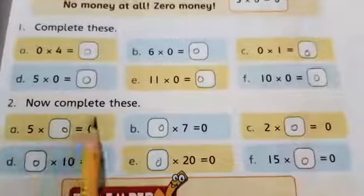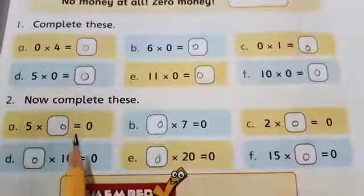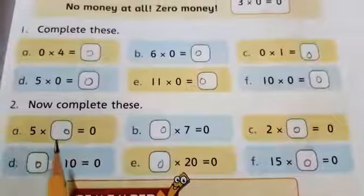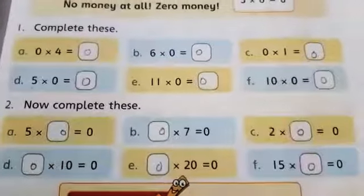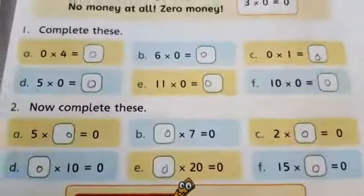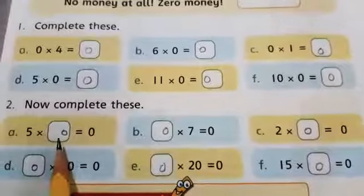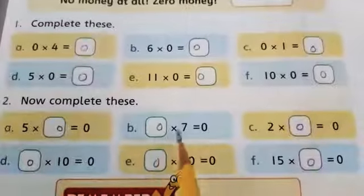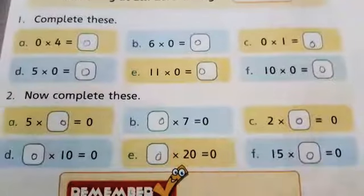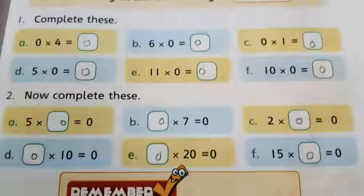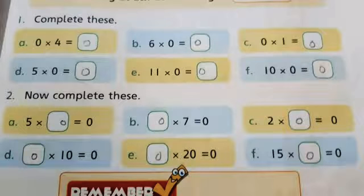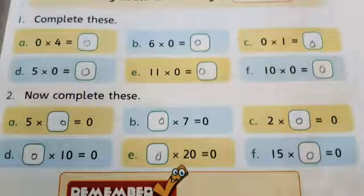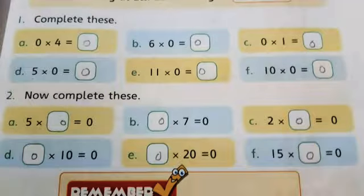Now question 2, now complete these. Part A, 5 multiplied by dash is equal to 0. 5, how many numbers multiplied by which answer will be 0? Students, we know that when we multiply 0 with any number, the answer will be 0. So it means 5, how many numbers will be multiplied? 0. Similarly, dash multiplied by 7 is equal to 0. We have multiplied 7 with 0. Then the answer will be 0. So write 0 in the box.